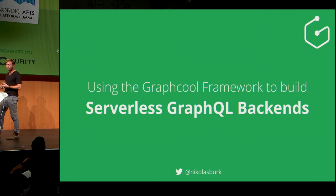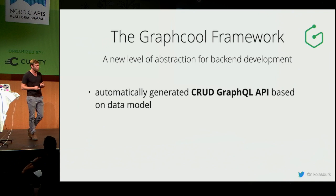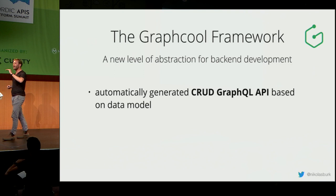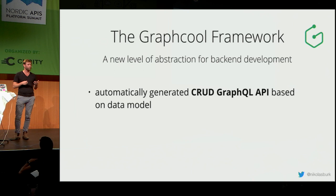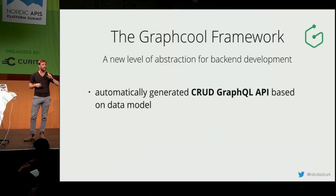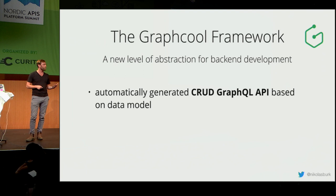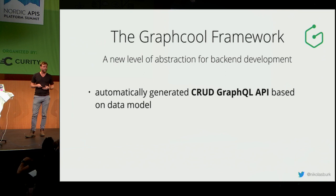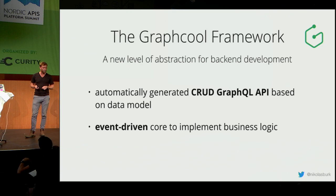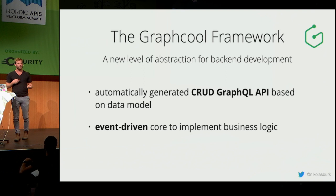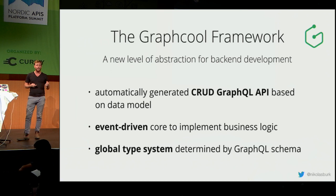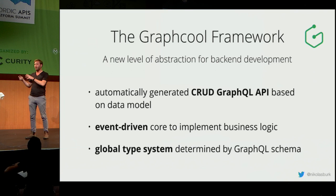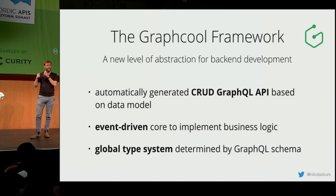The GraphQL framework allows you to build serverless GraphQL backends by providing a new level of abstraction for backend development. It abstracts away your database and automatically generates a CRUD API — no SQL required. You define your data model using the Schema Definition Language, and we generate the CRUD API automatically. There's also an event-driven core for invoking serverless functions, plus a global type system determined by the GraphQL schema.